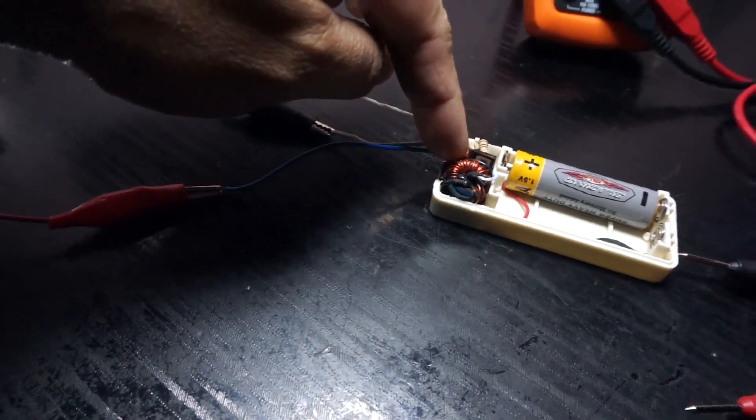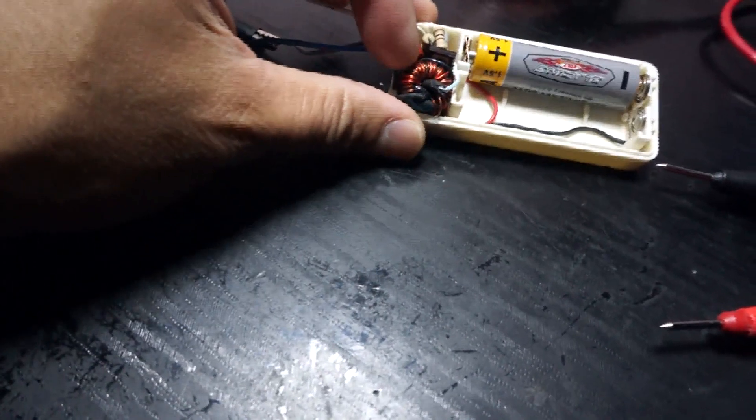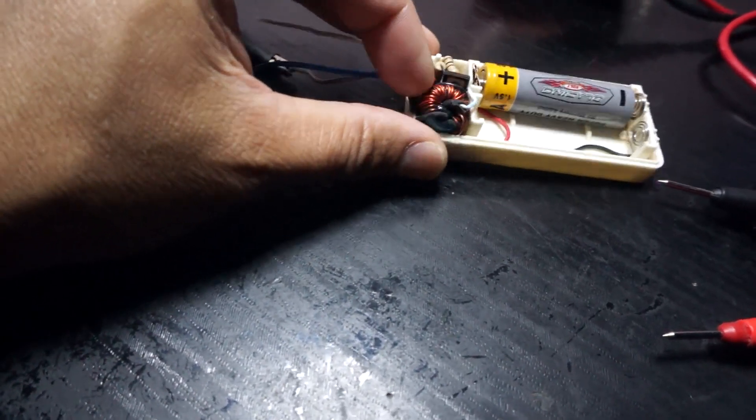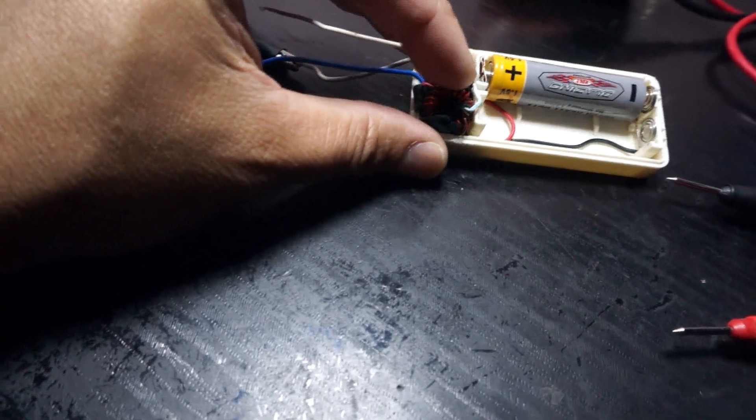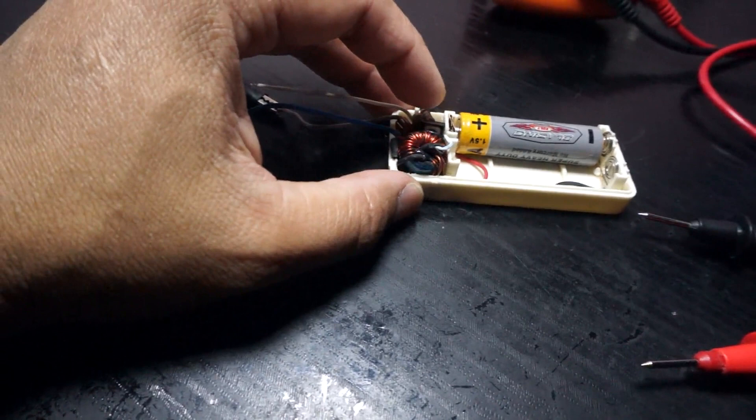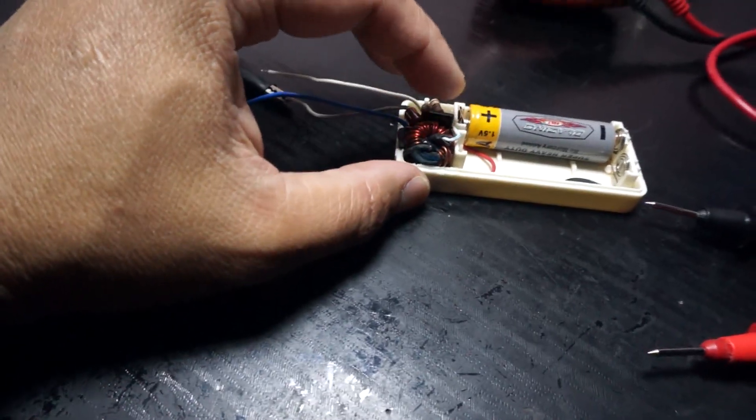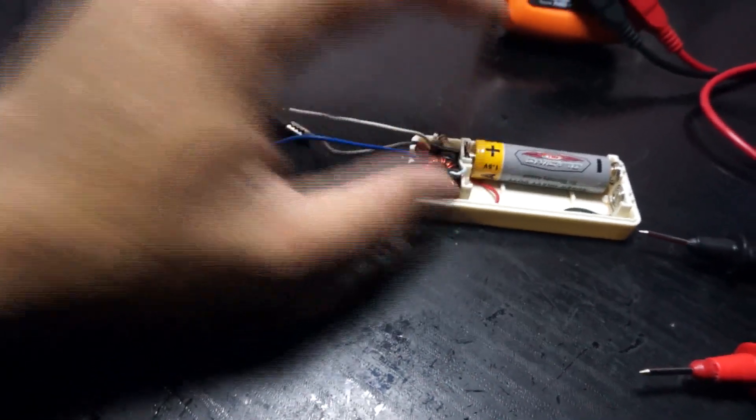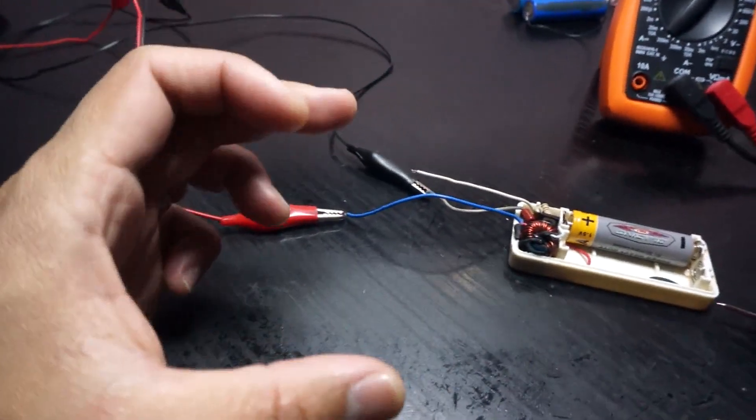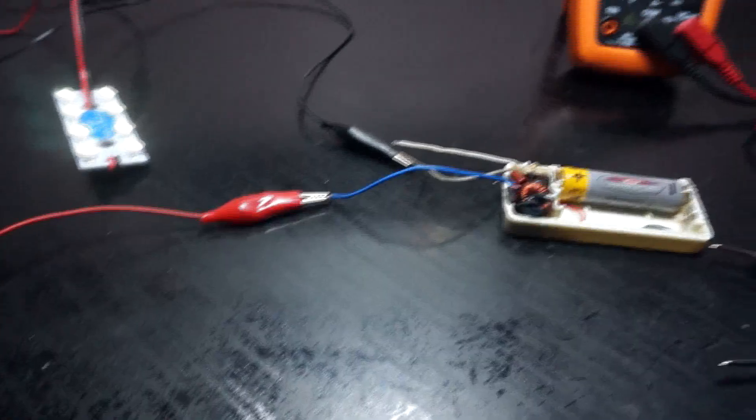This is the toroid, small toroid only, and the transistor I use is 13008. It's actually from a small power adapter. So let me show you the amp draw.